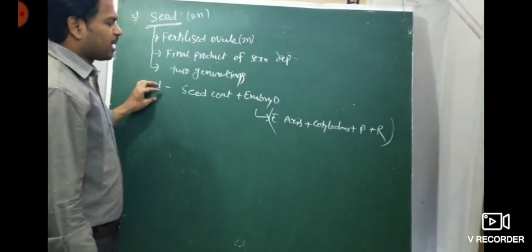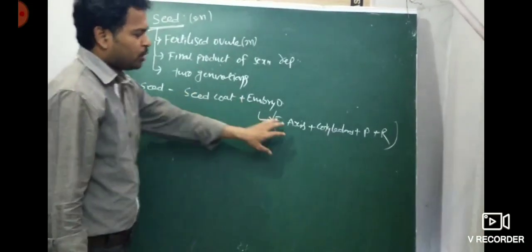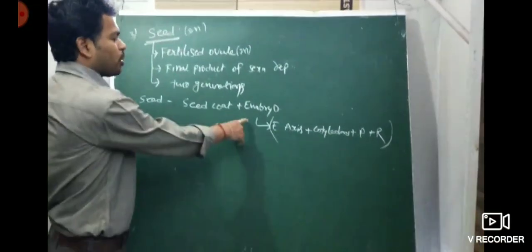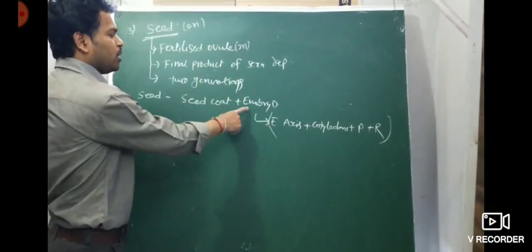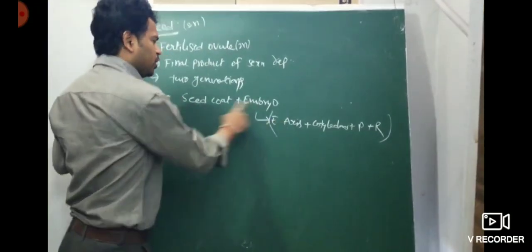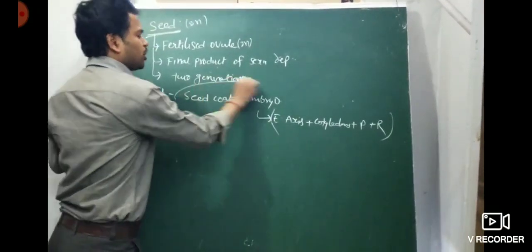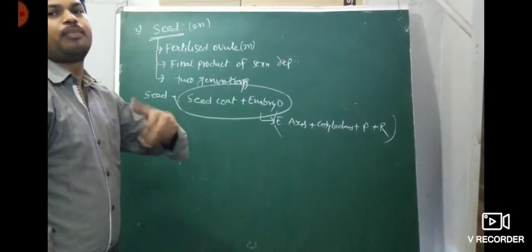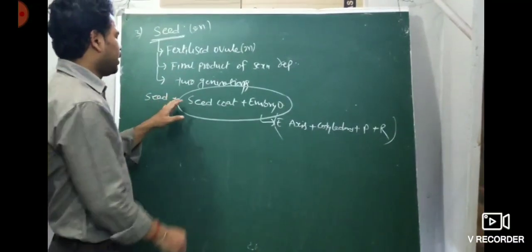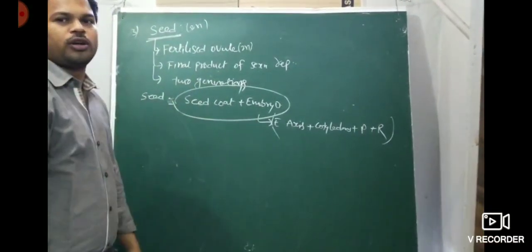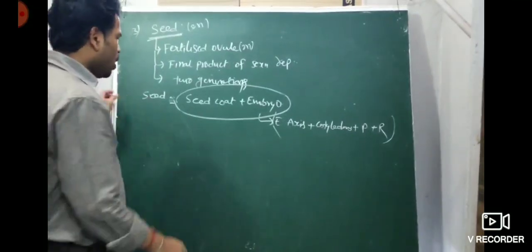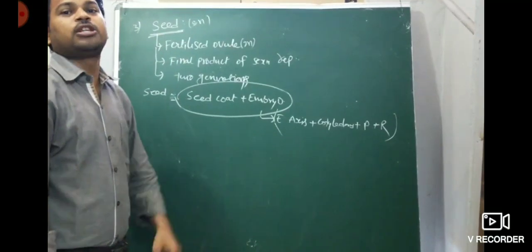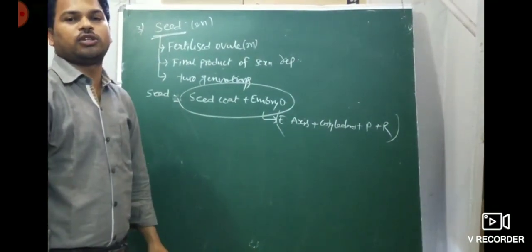Dicot seed consists of seed coat and embryonal axis with two cotyledons. After fertilization, ovule develops into seed, and ovule wall develops into seed coat which helps in protection. Outer integument develops into testa; inner integument develops into tegmen.